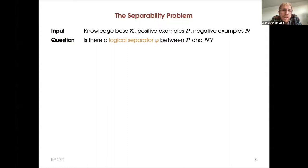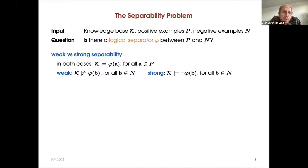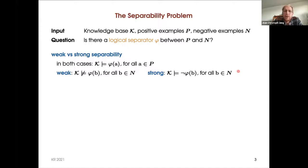Let me formally define the separability problem. We have a knowledge base with positive examples and negative examples as input, and the question is whether there is a logical separator between P and N. Because the ontology is present and because of the open world assumption, there are two versions: weak and strong. In both versions we require that the separating query is entailed at all the positive examples, but they differ in treatment of the negative examples. For weak separability, we require that the separating query is not entailed at any of the negative examples, while in the strong case, we require that the negation of the separating theory is entailed at all the negative examples.